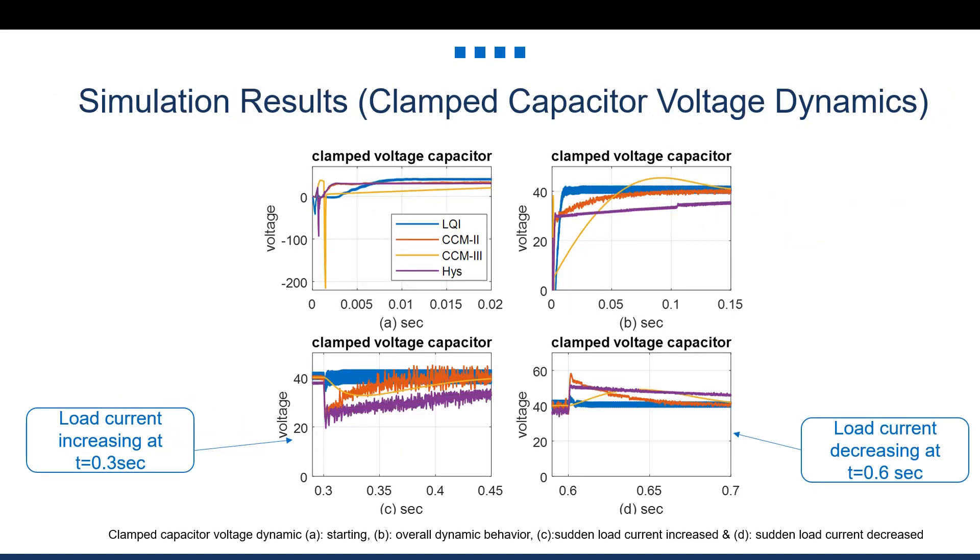The figure here shows the clamped capacitor voltage dynamics at different times during the simulation. The proposed controller shows significantly better overshoot and transient time compared to the three other scenarios. This is achieved by a relatively lower weight factor put on the clamped capacitor to be controlled with higher degree of freedom, which also leads to higher capacitor voltage ripple as shown.